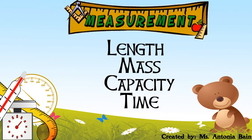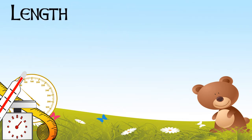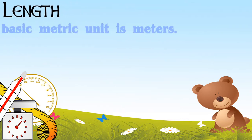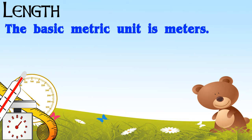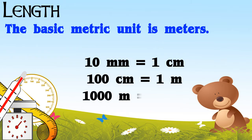Let's begin with length. The basic metric unit for length is meters. 10 millimeters is equal to 1 centimeter, 100 centimeters is equal to 1 meter, and 1,000 meters is equal to 1 kilometer.